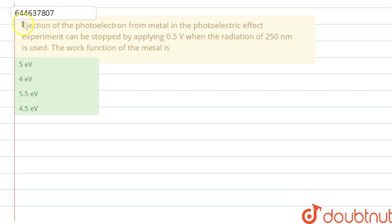Hello guys, in this question we have the ejection of the photoelectron from metal in the photoelectric effect experiment can be stopped by applying 0.5 volt when the radiation of 250 nanometer is used. The work function of metal is, we have 4 options given. We have to find out the work function.